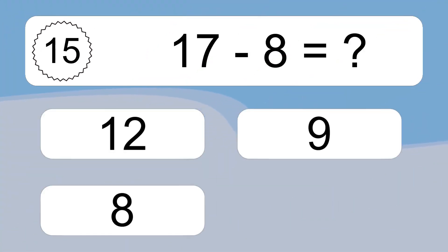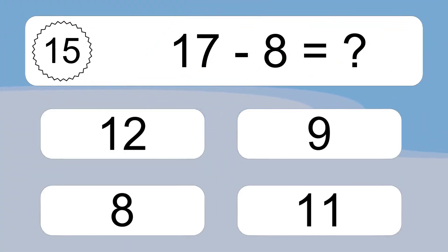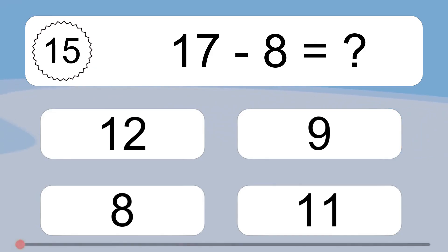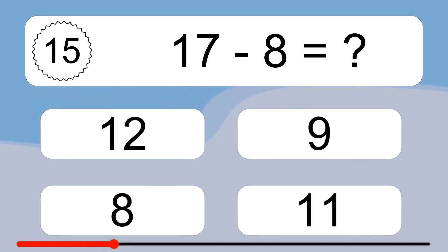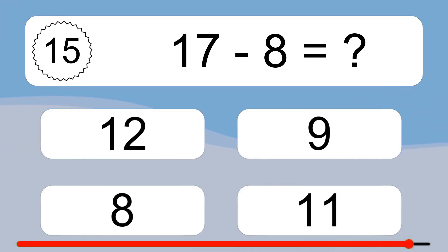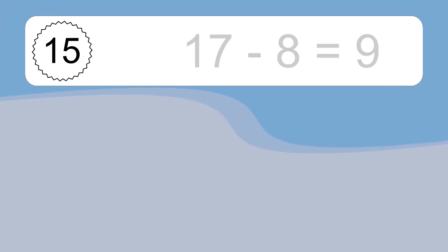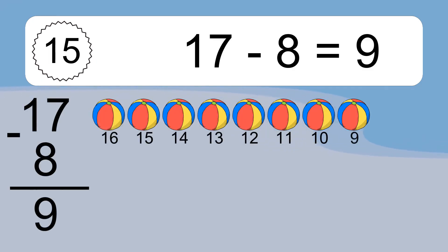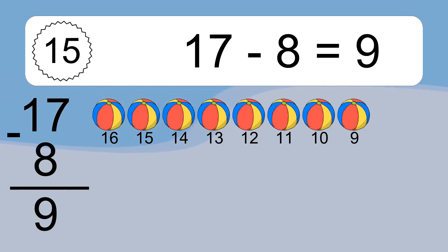17 minus 8 equals what? 17 minus 8 equals 9. Let's count it. 16, 15, 14, 13, 12, 11, 10, 9.